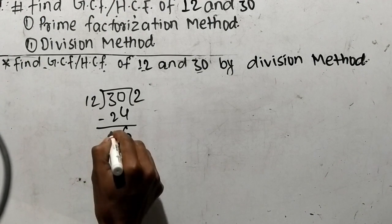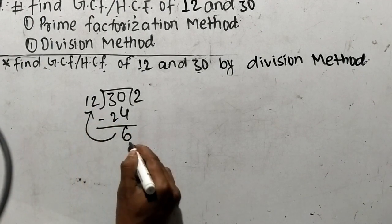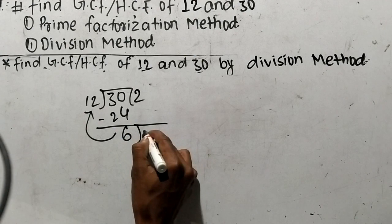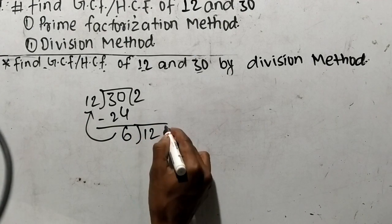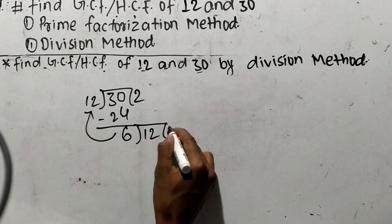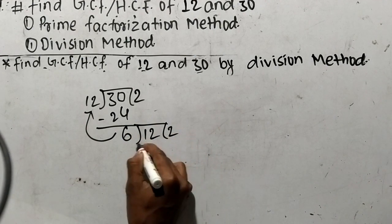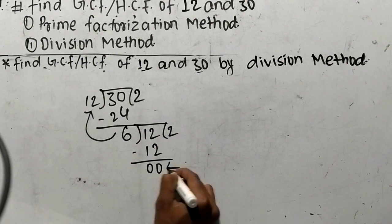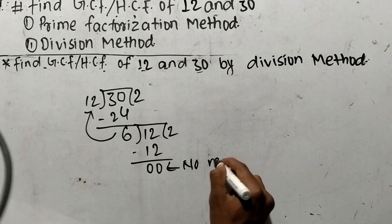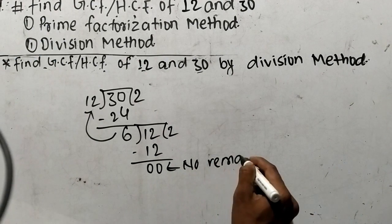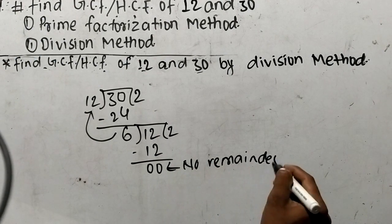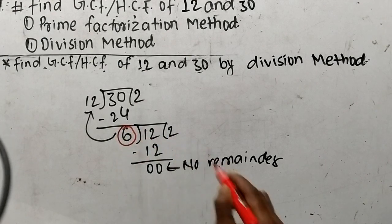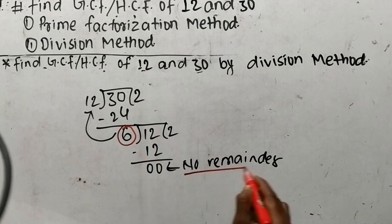When a remainder comes, we have to again divide the divisor with the remainder. So 6 divides the divisor 12: 6 times 2 means 12. So here we have no remainder. The divisor 6 leaves no remainder.